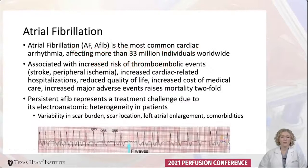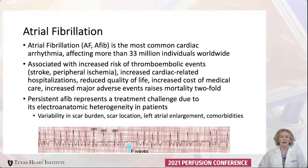Atrial fibrillation is the most common cardiac arrhythmia, affecting more than 33 million people worldwide. In the US alone, over 3 million people have AFib. It's associated with increased risk of thromboembolic events like stroke and peripheral ischemia from embolus, reduced quality of life, and also increased mortality.